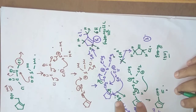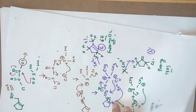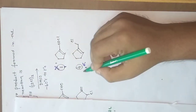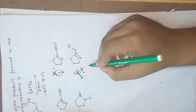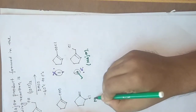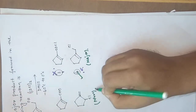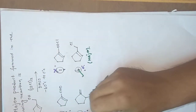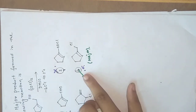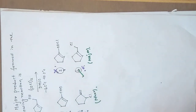Since only one option seems to be correct, that is option four. This option is correct because this product is produced in major amount, and the other product is produced in very minor amount. So option three seems to be wrong, and there is only one correct option — that is four. Thank you for watching. Have a nice day.